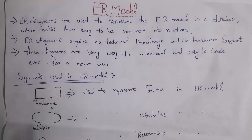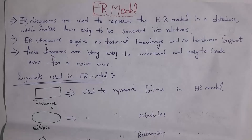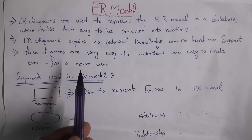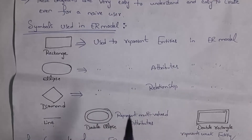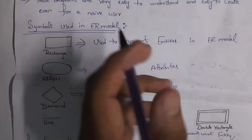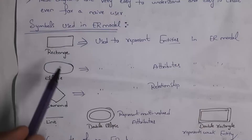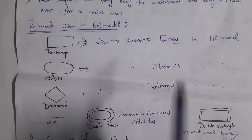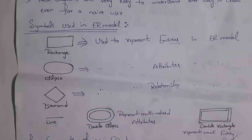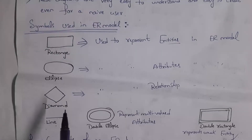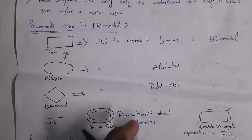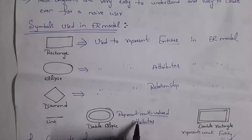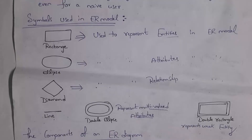People who don't have any knowledge on database are known as naive users. Even naive users can design ER diagrams. These are various symbols used in ER model. Rectangle is used to represent entities — entities are nothing but table names. Ellipse is used to represent attributes — attributes are nothing but column names. Diamond symbol is used to represent relationship. Line is used to connect all these. Double ellipse is used to represent multi-valued attributes. Double rectangle is used to represent weak entity.